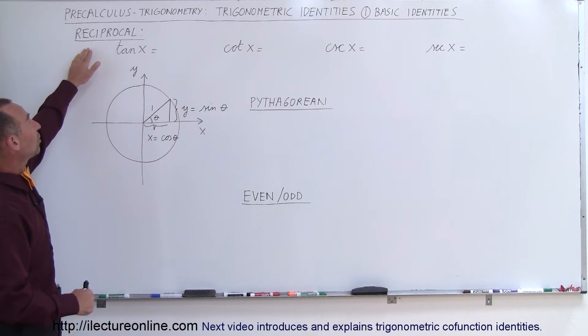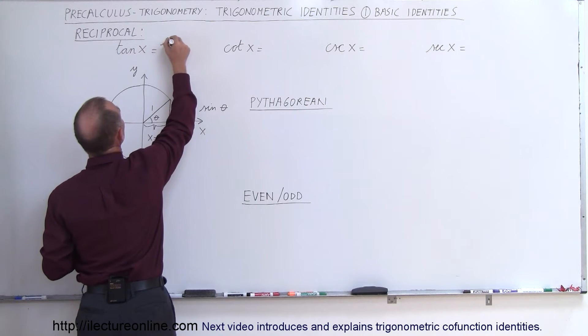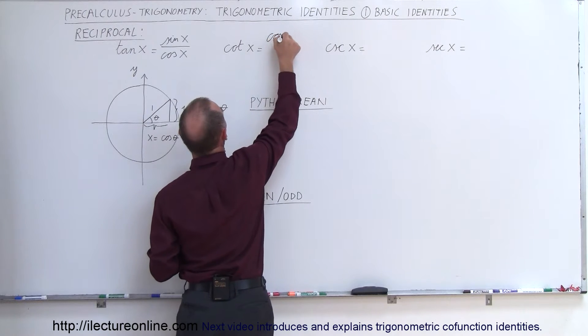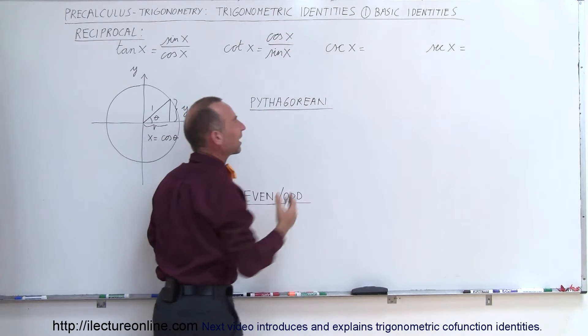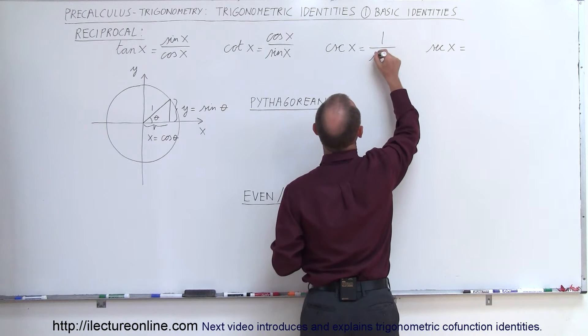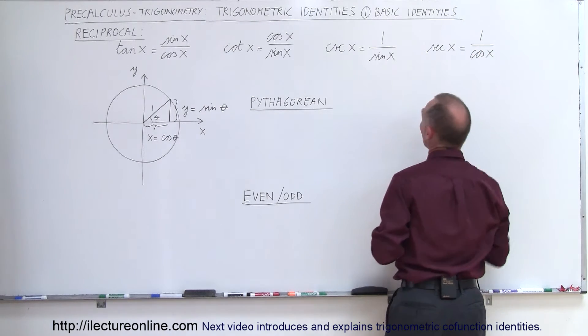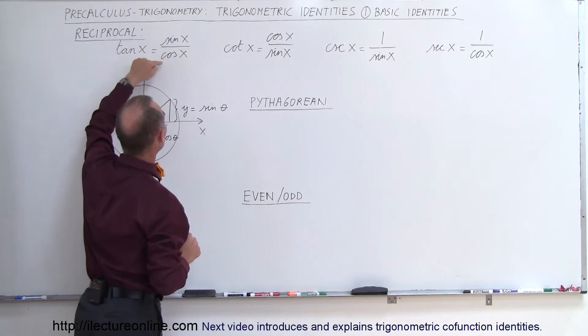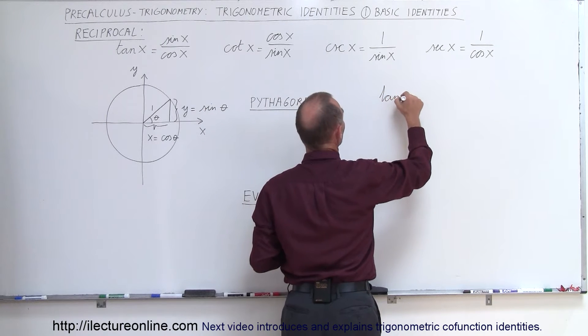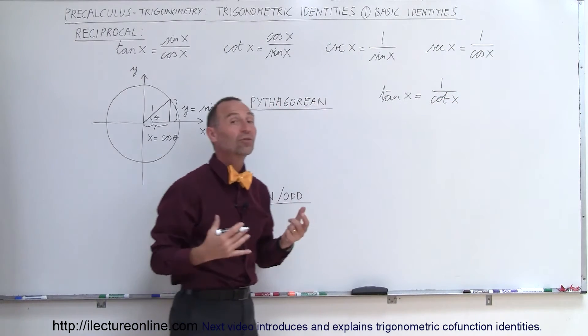First, we're going to look at what we call reciprocal identities. We have the tangent of x which can be written by the ratio of the sine of x divided by the cosine of x, and the cotangent of x can be written as the cosine of x divided by the sine of x. Yes, we've seen those before so this is kind of a repeat, but it's always good to repeat a few things. The cosecant of x is 1 divided by the sine of x, and the secant of x is 1 divided by the cosine of x. Since the tangent of x is sine divided by cosine and the cotangent is cosine divided by sine, we can conclude that the tangent of x can also be written as 1 over the cotangent of x. That means the tangent and the cotangent are reciprocals of each other.